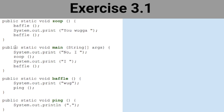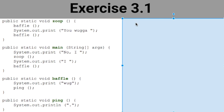First, you need to identify all the methods. I can see one called zoop, one called main — and main is the one I want to start with — one called baffle, and one called ping. These are terrible names because they don't make any sense, but they're doing that so you can practice the skill of reading through the code.